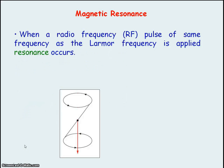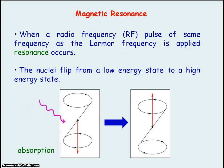When a radio frequency pulse is applied and this pulse has the same frequency as the Larmor frequency of the nuclei, then resonance occurs. This means that the nuclei absorb the radio pulse energy and, as they gain energy, they move from a low energy state to a high energy state.